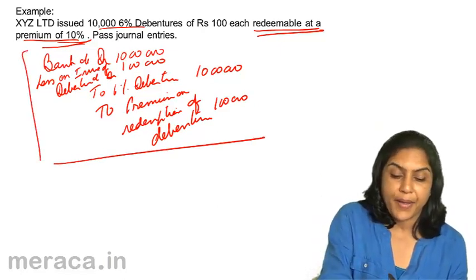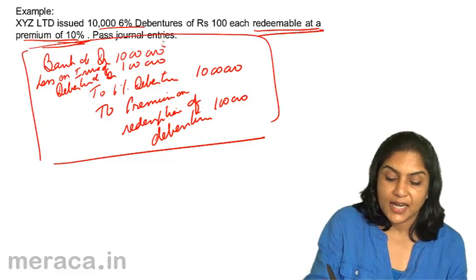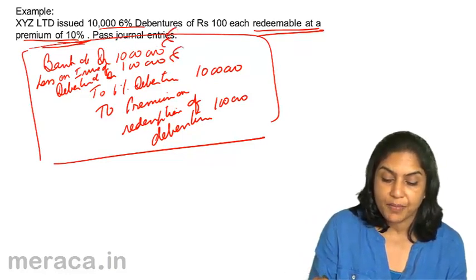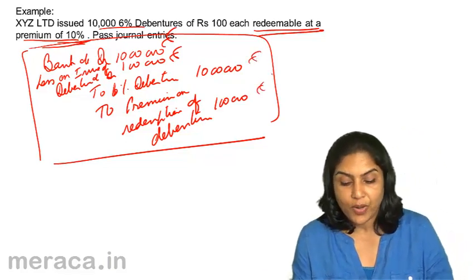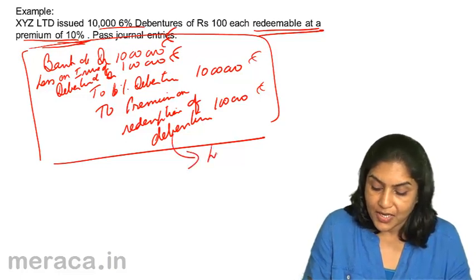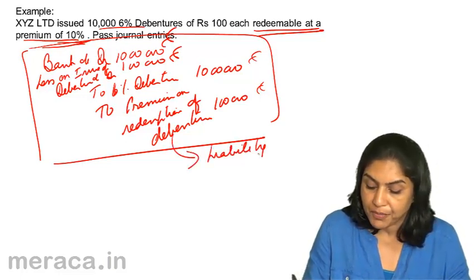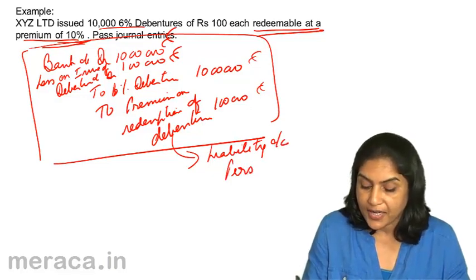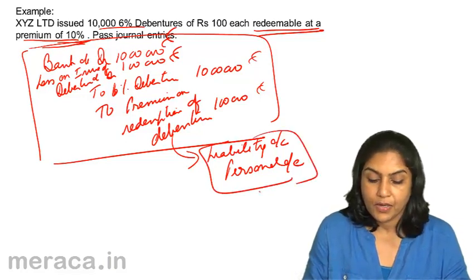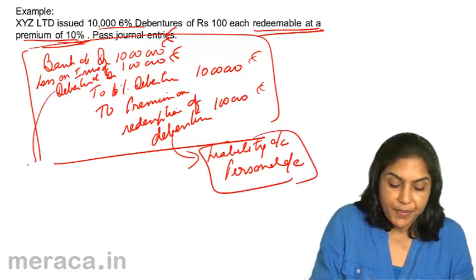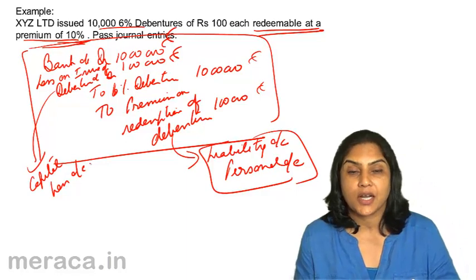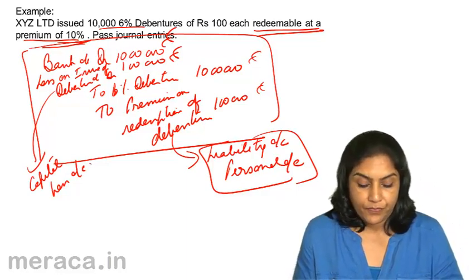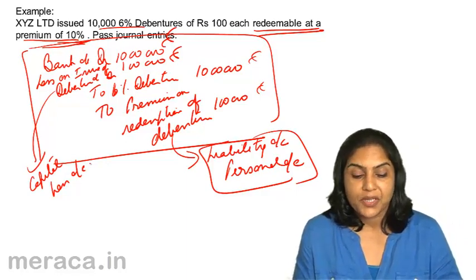The full entry is: bank account debit Rs.10,00,000; loss on issue of debentures account debit Rs.1,00,000; to 6% debentures Rs.10,00,000; to premium on redemption of debentures Rs.1,00,000. The premium on redemption of debentures is a liability account and a personal account. The loss on issue of debentures is a capital loss account and will be written off over the life of the debentures.